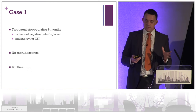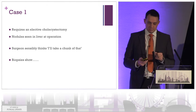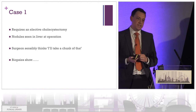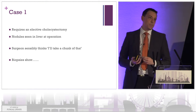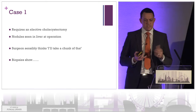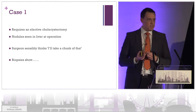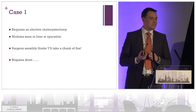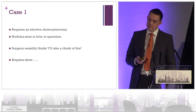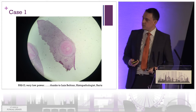We stopped his treatment after six months on the basis of a negative beta-D-glucan on a couple of readings and consistent improvement in his PET-CT. He had no recrudescence of his symptoms. But then he needs an elective cholecystectomy — he has a gallstone — and at operation the surgeons see some nodules in his liver and fairly sensibly say, let's take a chunk of that and send it to the histopathologist.